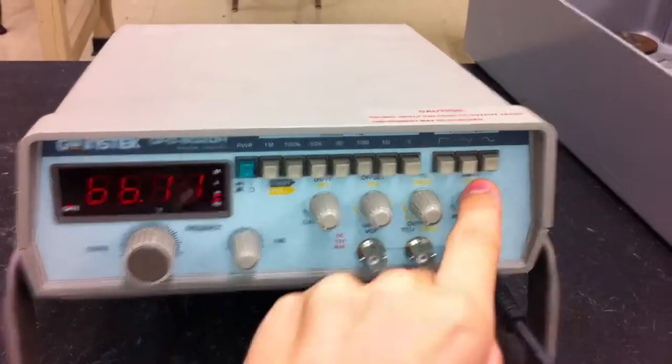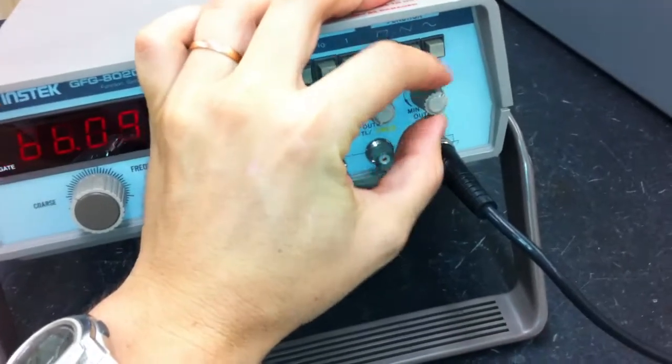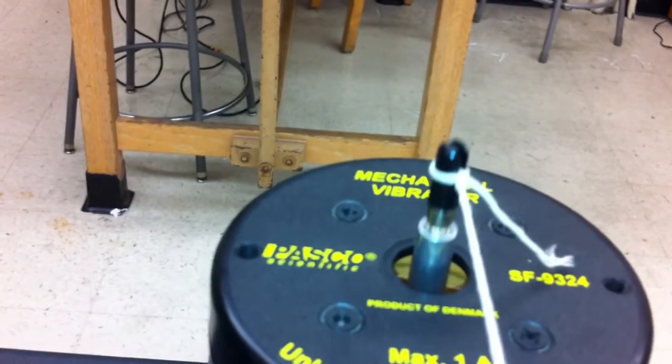These knobs don't really matter except for this last knob which must be turned all the way to the right. This controls the amplitude of the waves and this should be at maximum so that you can see the waves that you are producing.